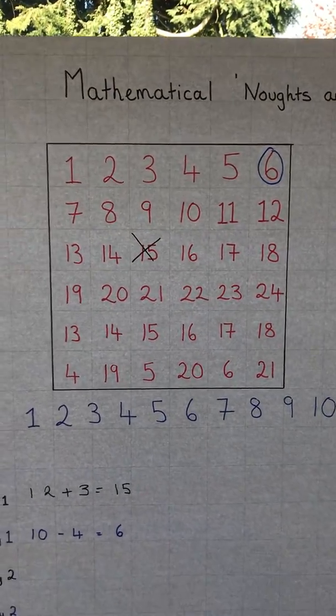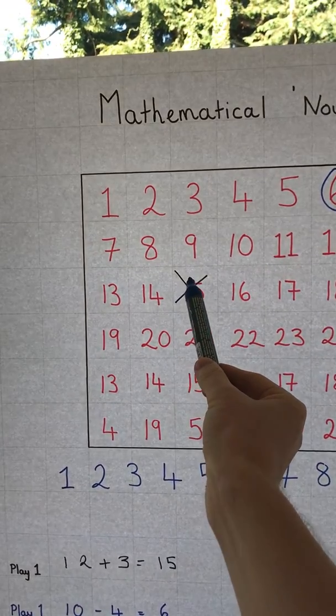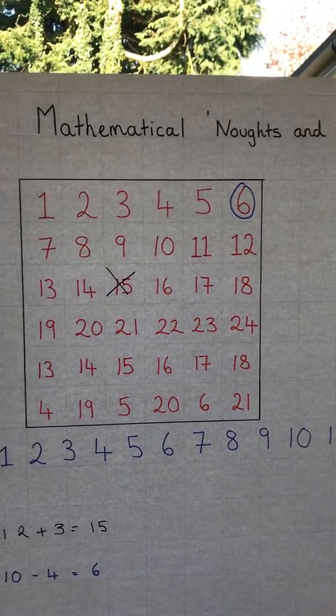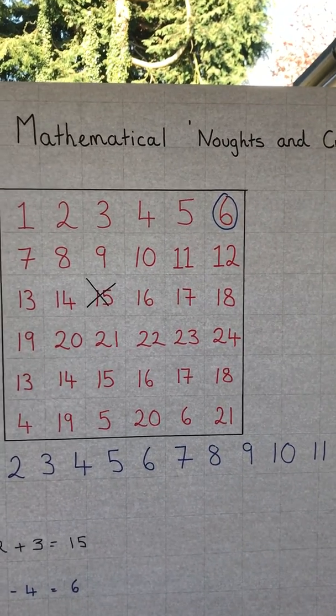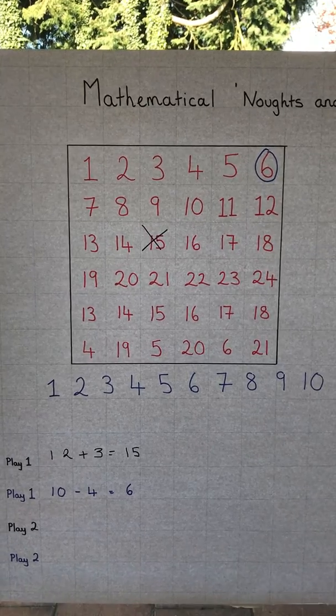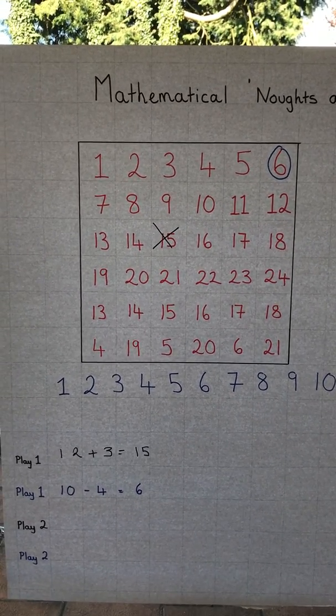The game goes on and on until you can find a winner where either you have 4 crosses in a row - we can go vertically, horizontally, diagonally - or we have 4 noughts in a row as well. Have fun, enjoy, and let me know how you get on. Stay safe everyone!